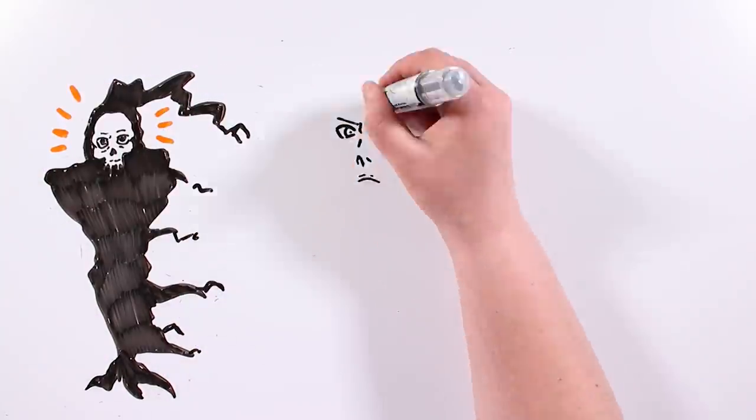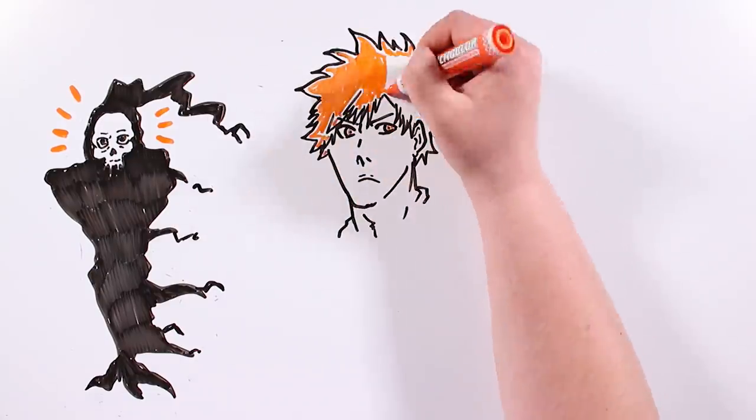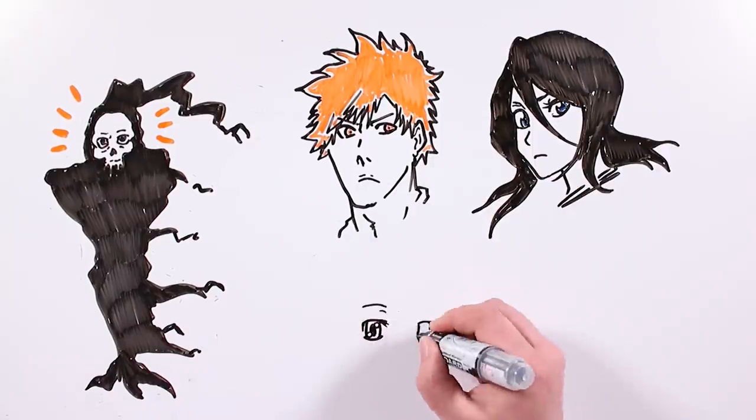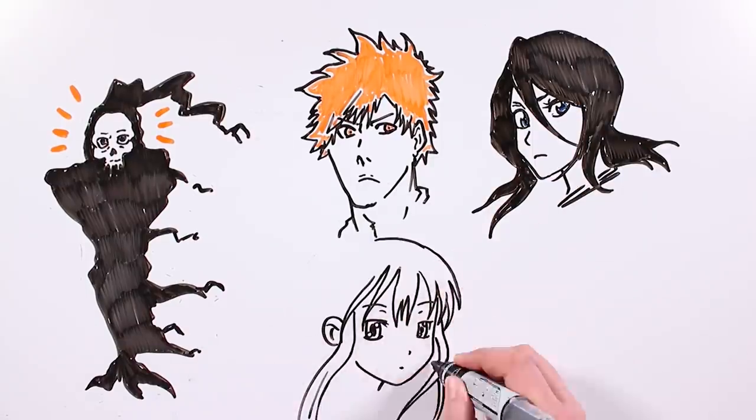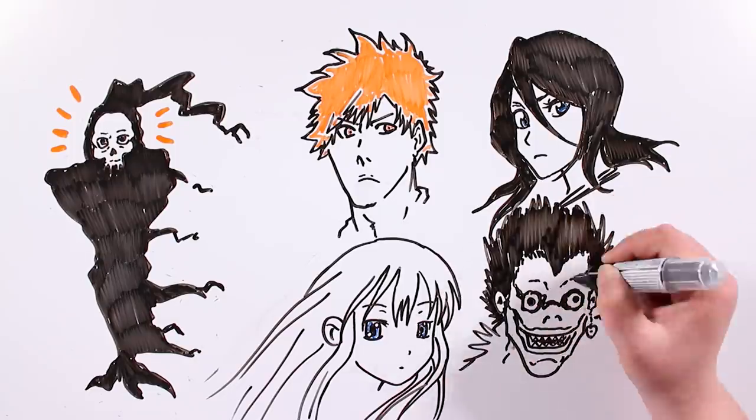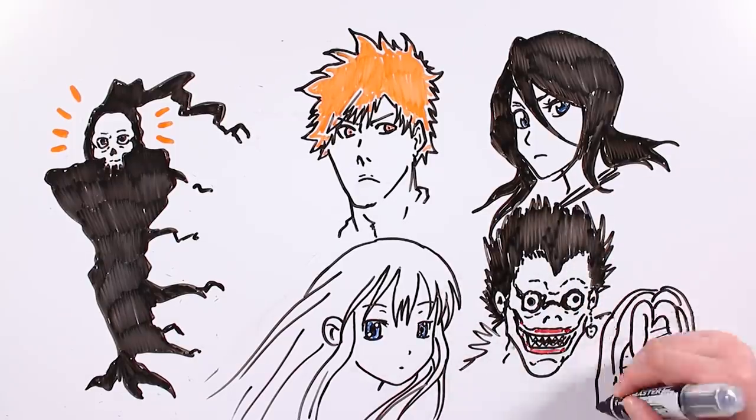As recurring creatures in lots of manga and anime, they've had different representations, from human shapes like Ichigo and Rukia from Bleach and Momo from Ballad of a Shinigami, to cadavers and deformed beings who like apples, like Ryuk and Rem from Death Note.